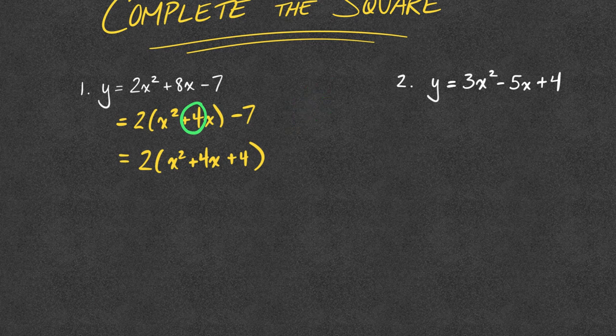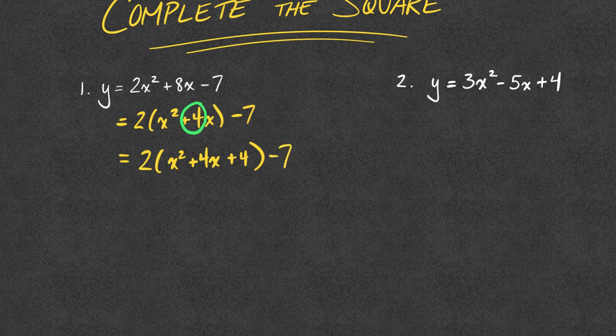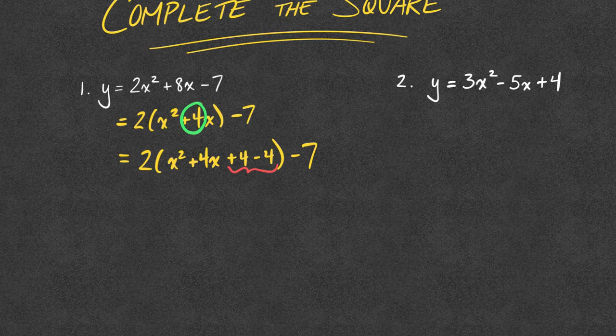Nice. I want you to notice, though, that if I go through and I just write that down, I've now changed the value of my function. So, I cannot just add in a four. But what I'm going to do is subtract it right out again as I go. So, what you'll notice by what I underline in red, that value is zero. So, really all I did was just add in a zero. I did not change the value of the function.